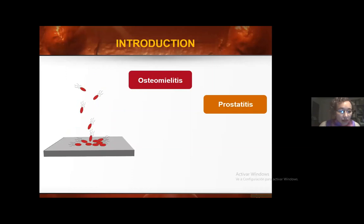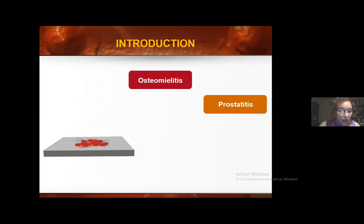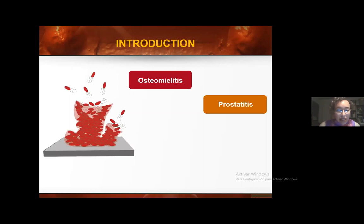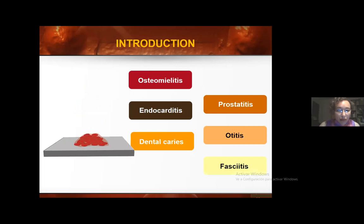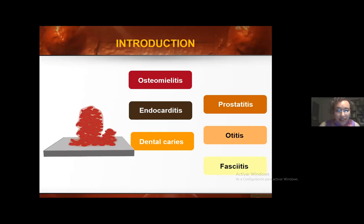A biofilm can be described as a collection of bacteria embedded in a dense, viscous barrier of sugars and proteins. The biofilm barrier protects microorganisms from external threats, and there are some infections that can be produced by this kind of biofilm bacteria: osteomyelitis, endocarditis, dental caries, prostatitis, otitis, and fasciitis.